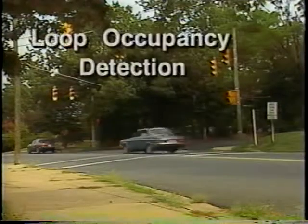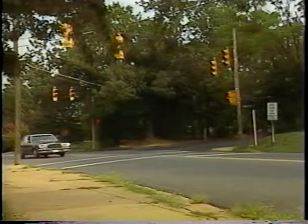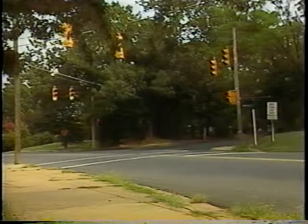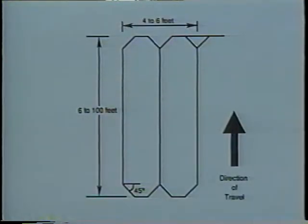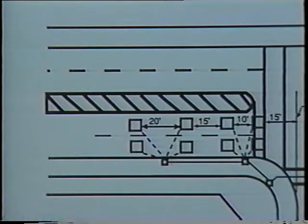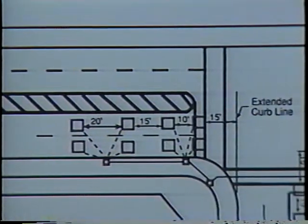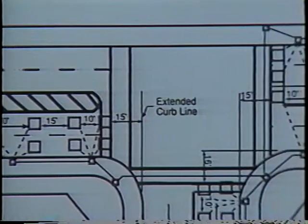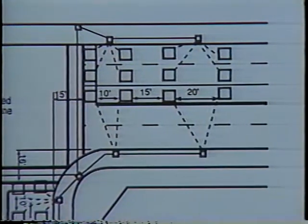Loop occupancy detection, generally chosen for low speed approaches, uses two basic configurations located immediately upstream from the stop line. The single loop configuration is 50 or more feet in length. The second design consists of a sequence of short loops, usually four short loops. When loop occupancy detection is chosen for large detection areas, this alternative requires the installation of additional long or short loops.